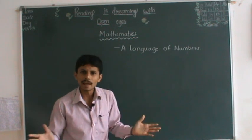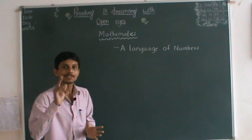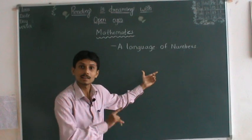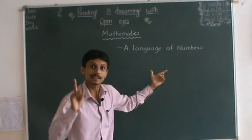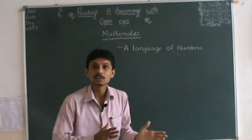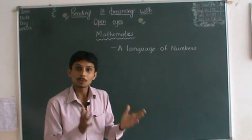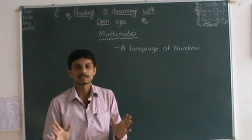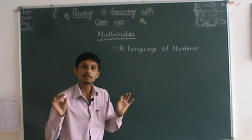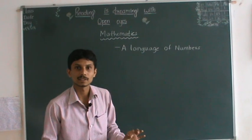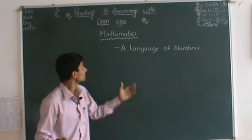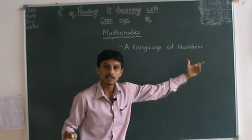All these languages have their own literatures. Similarly, Mathematics is also a language, and that language has its own literature — and that literature is nothing but numbers. So that means: no numbers, no Mathematics. Numbers are the basic property of Mathematics.